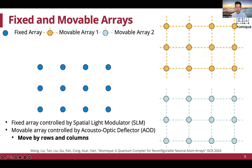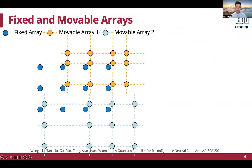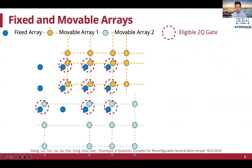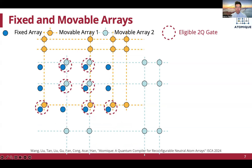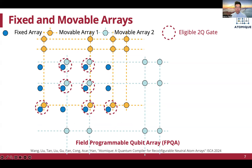In the neutral atom device we study, there are two kinds of atom arrays. One is a fixed array in blue, in which the atoms stay stationary throughout the whole computing process. Another kind is movable arrays in yellow and green, in which atoms stay on the crossings of a grid and can be moved by an entire row or column. During quantum circuit execution, we can move the rows and columns of the movable atoms coherently. The reconfigurable locations provide large flexibility on the qubit coupling map. All qubit pairs within a certain distance, called the Rydberg radius, can perform eligible two-qubit gates. We call this device FPQA, Field Programmable Qubit Array, in analogy to FPGA devices, because qubit mapping is similar to placement in FPGA, and atom movement is similar to routing in FPGA.